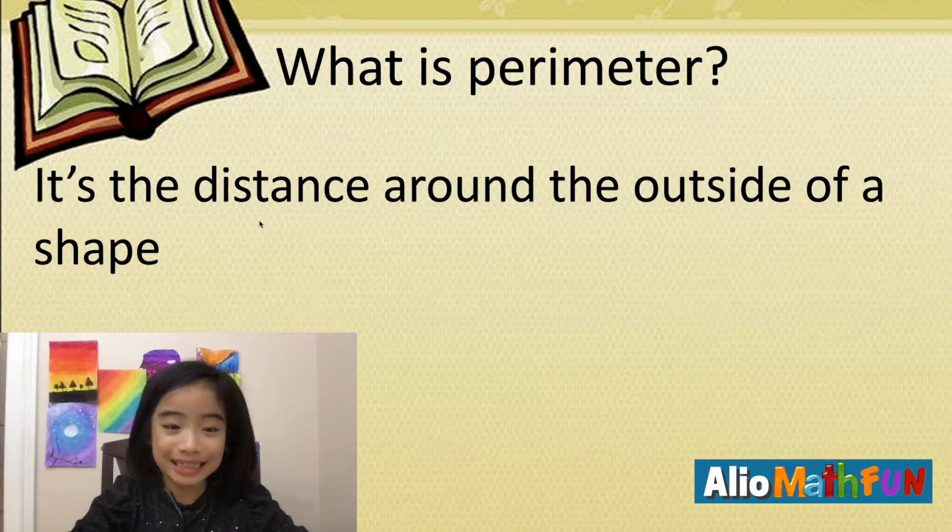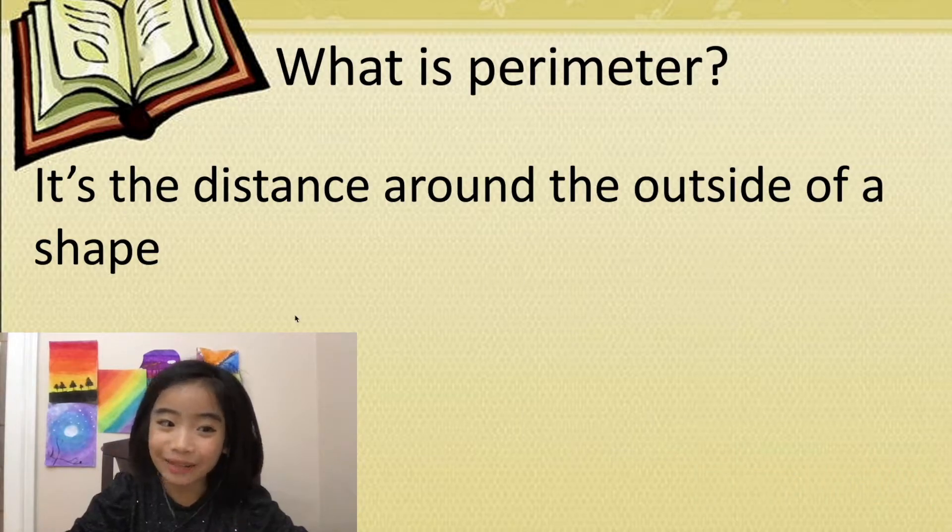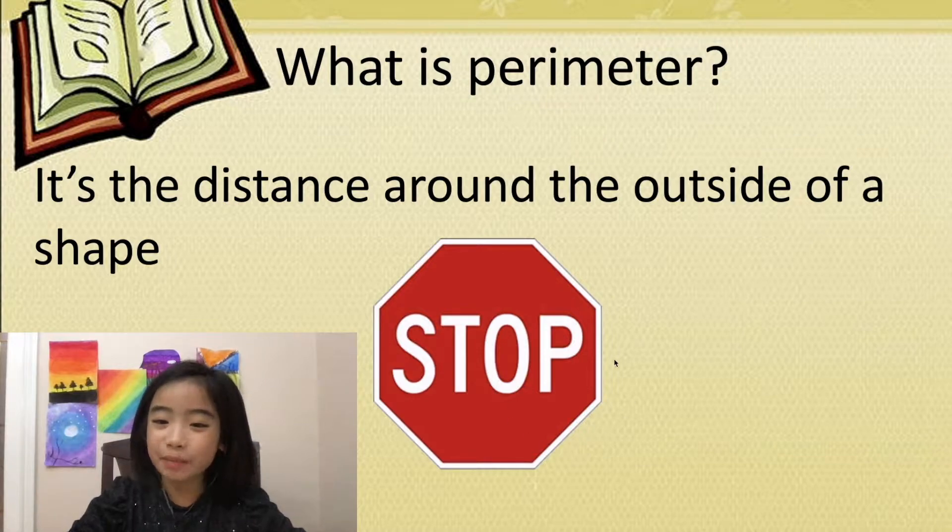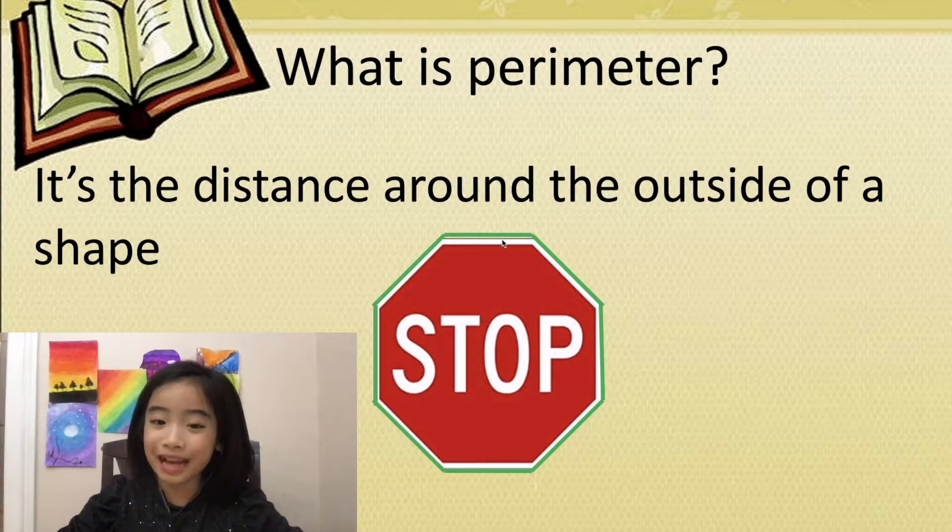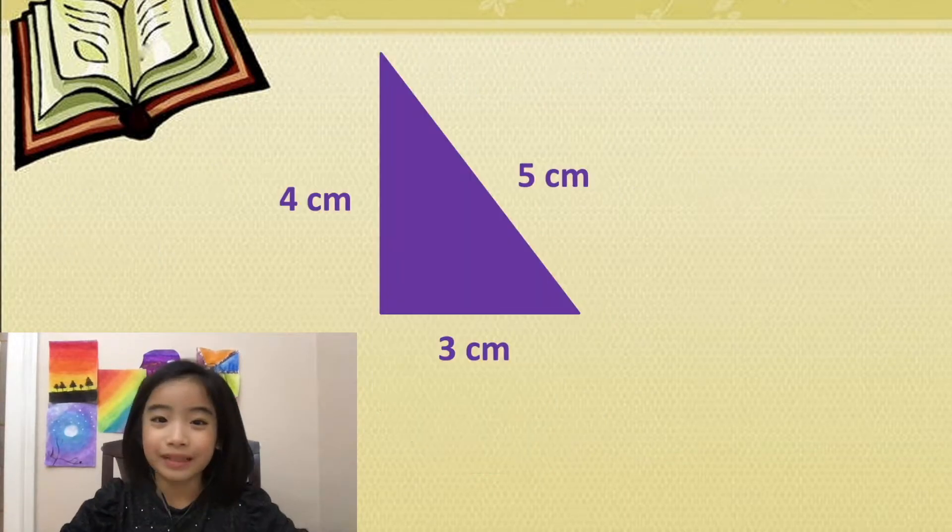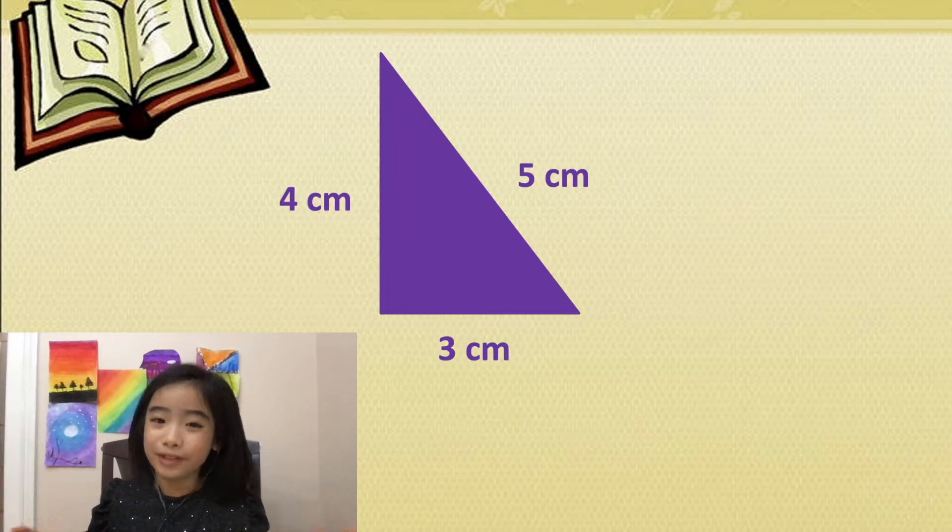Well, it's the distance around the outside of a shape. Here I have a stop sign. The length of the green line around the stop sign is the perimeter of the stop sign. Now let's look at a few examples.